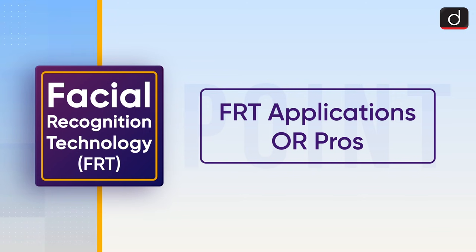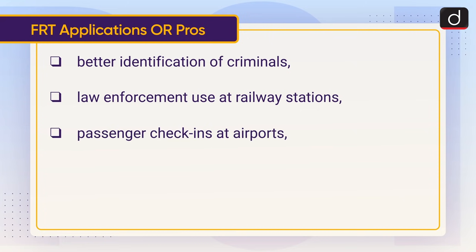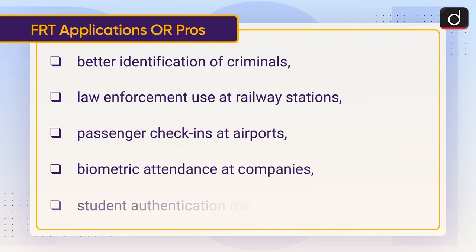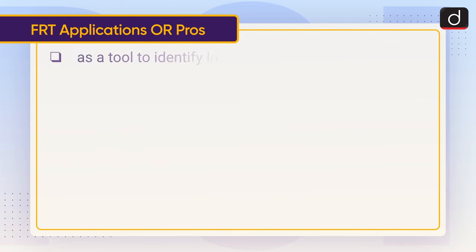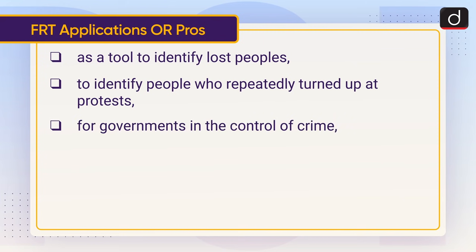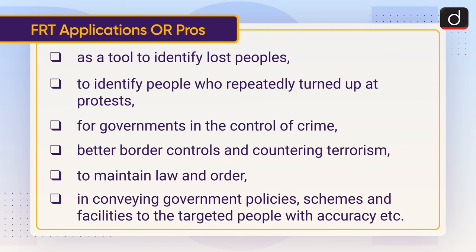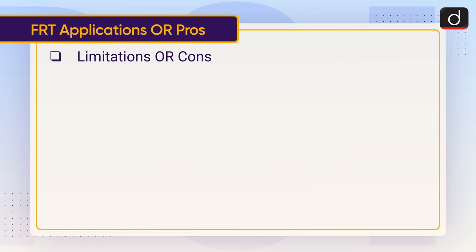There is no separate law for the regulation of FRT in India. Some applications or pros of FRT include: better identification of criminals, law enforcement use, railway stations, passenger check-ins at airports, biometric attendance at companies, student authentication mechanisms, identifying lost people, identifying people at protests, better border controls, countering terrorism, and conveying government policies and schemes to targeted people with accuracy.